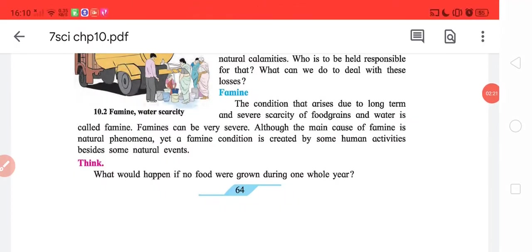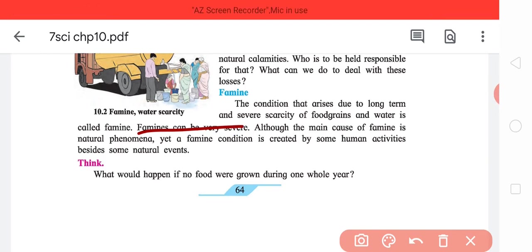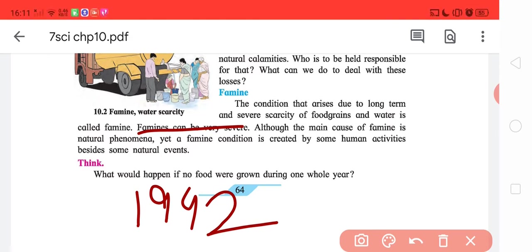Famines can be very severe. If you want to Google how severe a famine can be, just Google Bengal famine of 1942. This was a really severe famine and actually the British government are hated because they allowed that to happen. It was a traditional case of man-made famine.